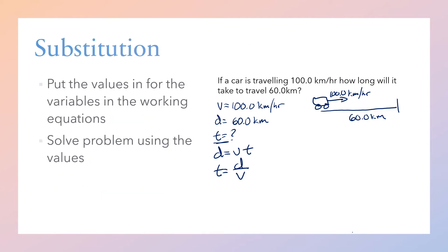Our next part is substitution. Now we're actually going to put in the values that we've defined. We know that d is 60.0 kilometers, and we know that v is 100.0 kilometers per hour.